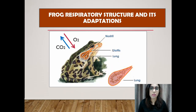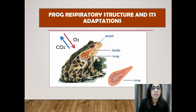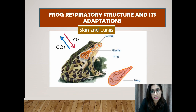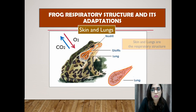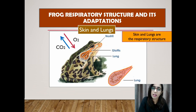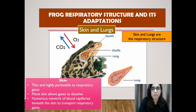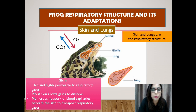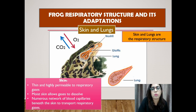Now let's look into the frog respiratory structure and its adaptation. Amphibians such as frogs have a respiratory structure adapted for gas exchange both on land and in water. On land, the frog uses its moist skin and lungs for gas exchange. When in water, frogs are less active and gas exchange happens through their skin. The frog has thin and permeable skin which helps increase the rate of diffusion of respiratory gases. The frog's skin mucus glands release mucus to ensure the skin is always moist to dissolve respiratory gases, and it also contains numerous networks of blood capillaries beneath the skin to transport respiratory gases.